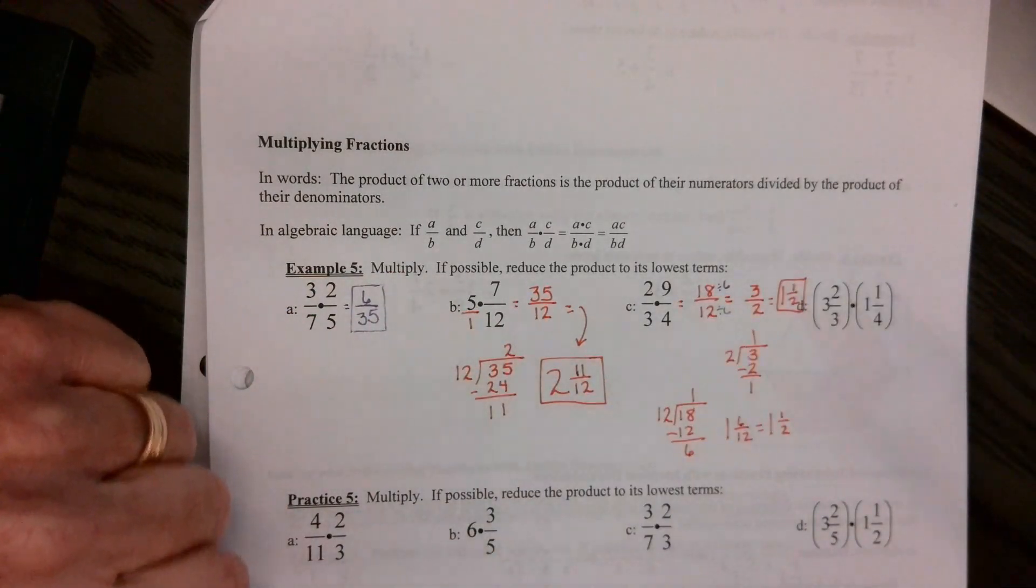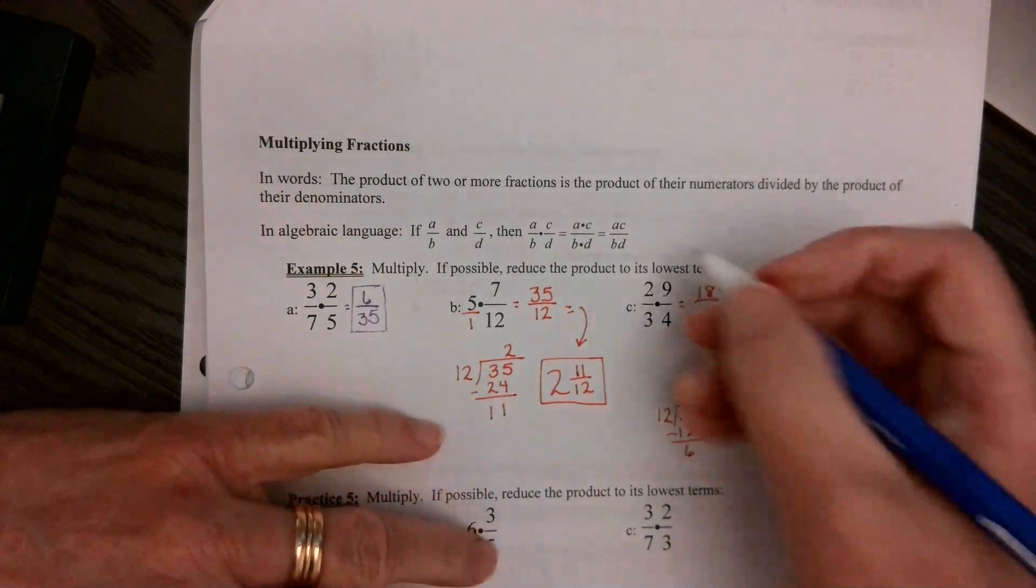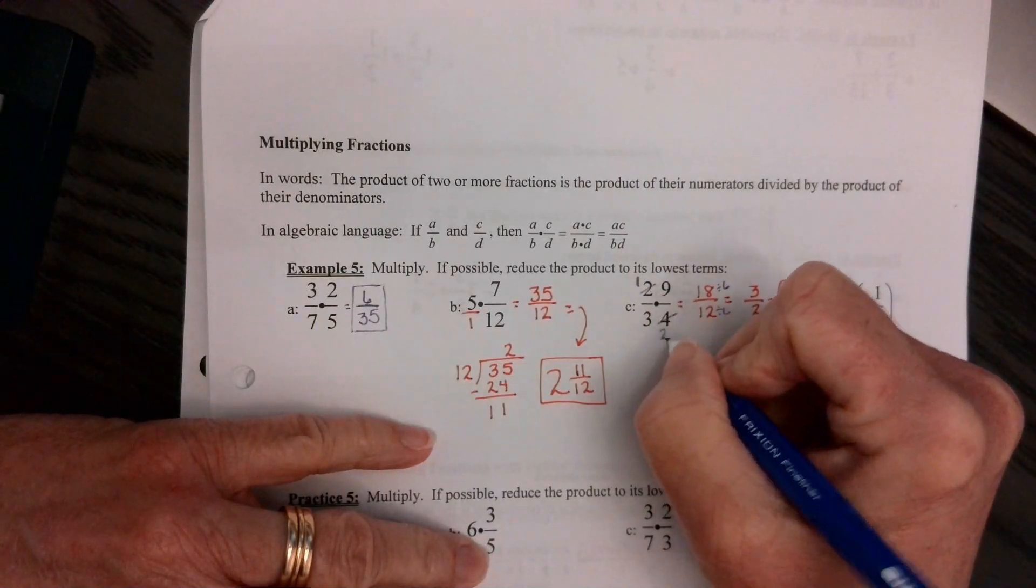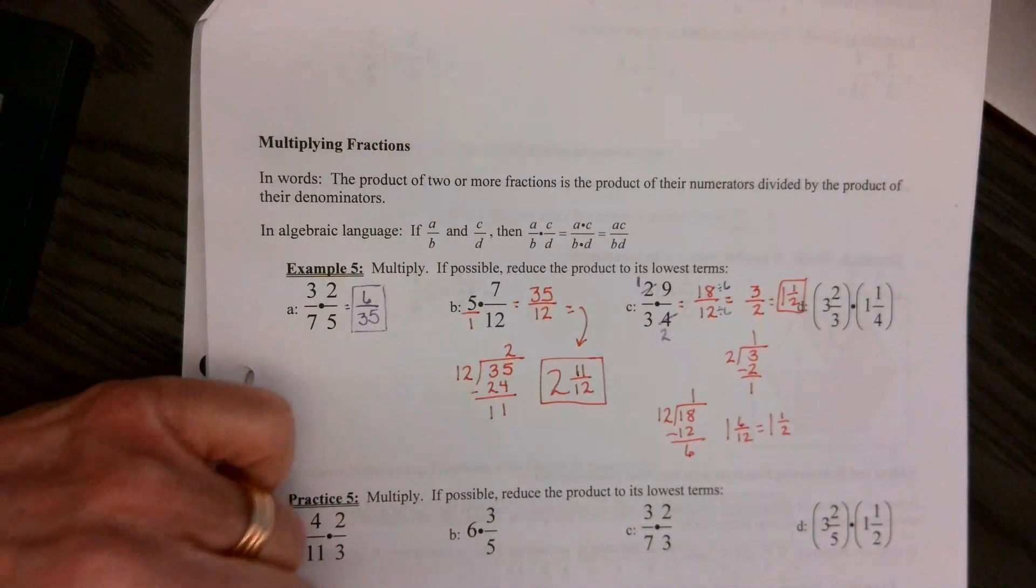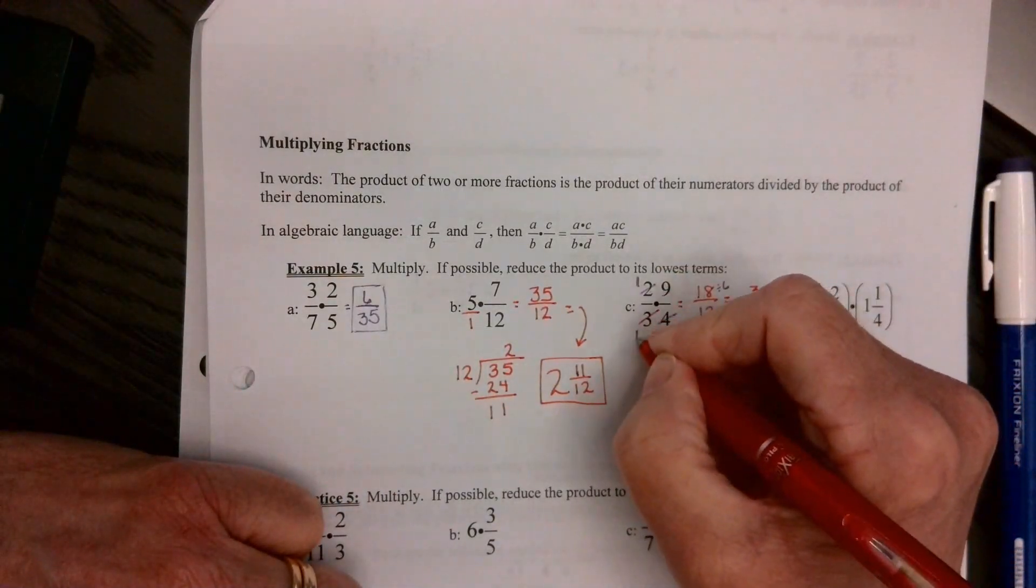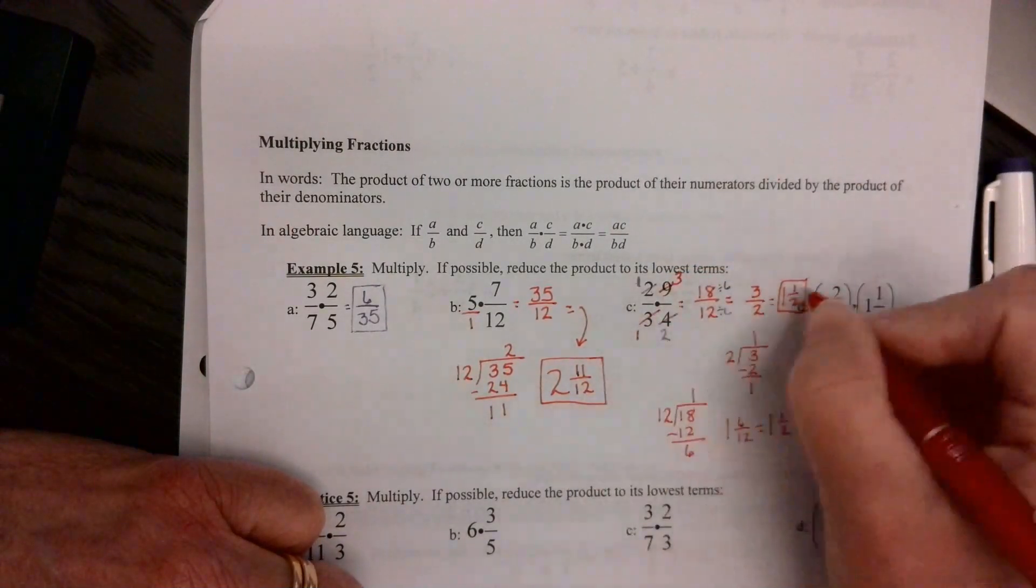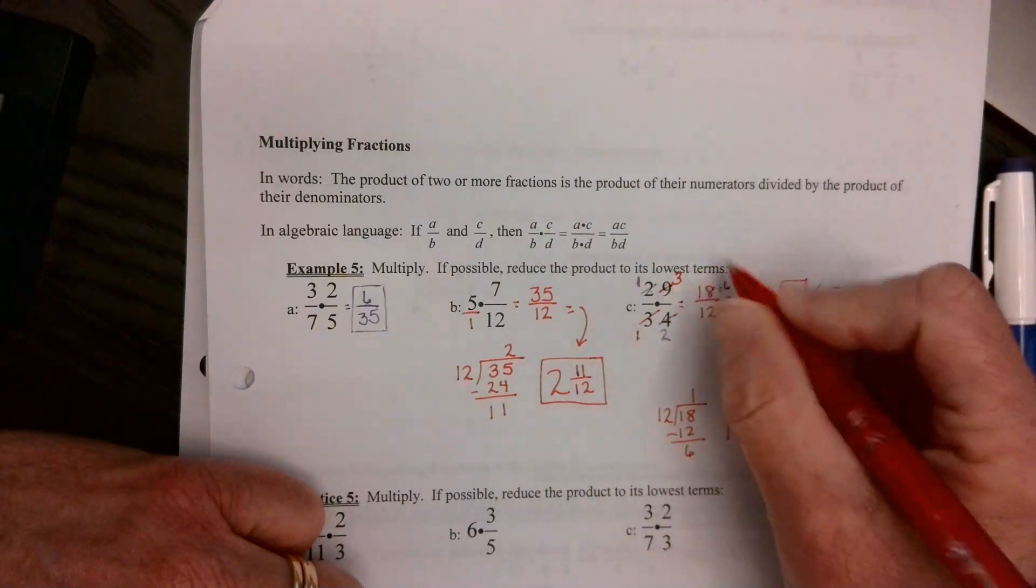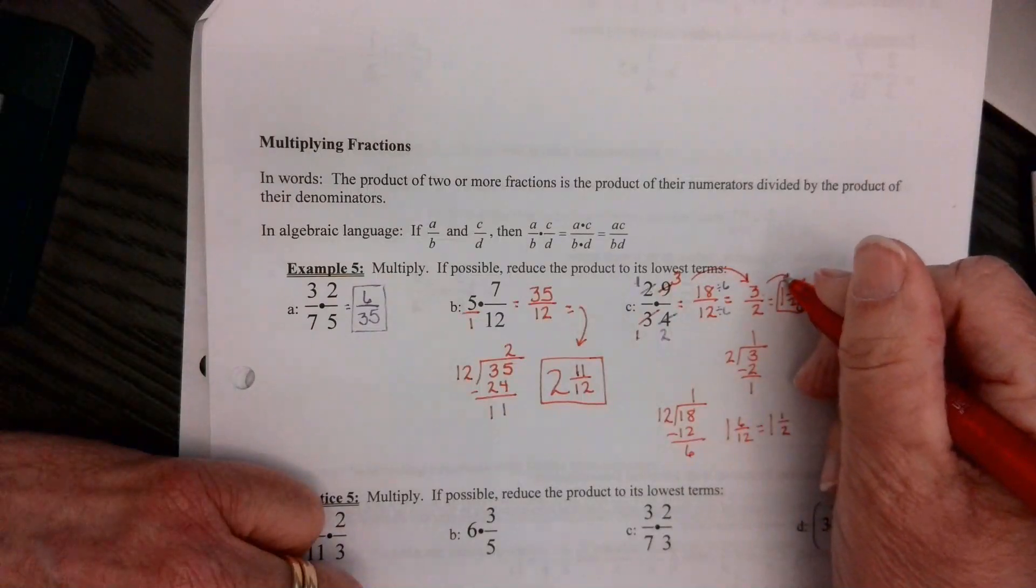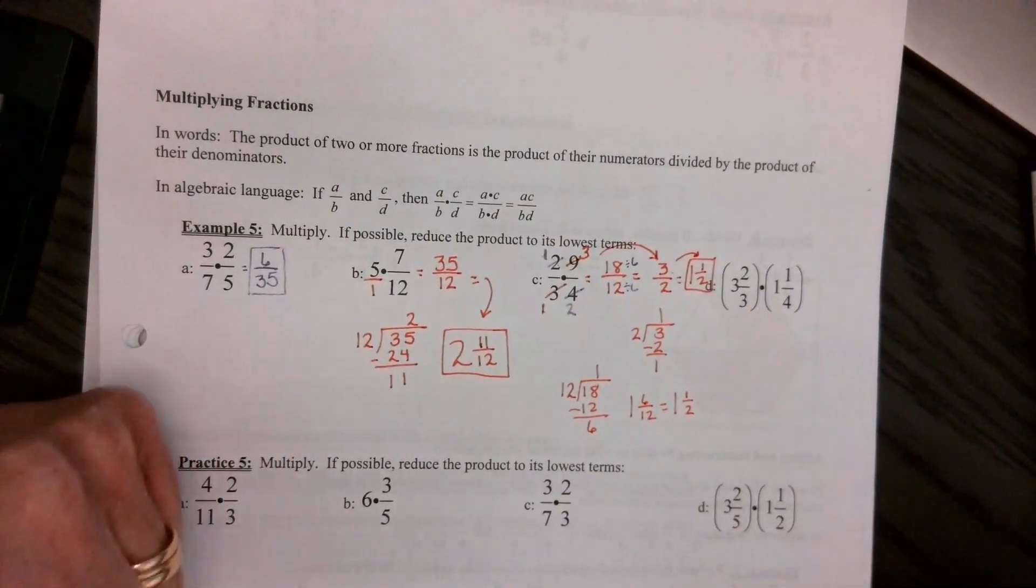That's not even how I do it. You guys multiply, then reduce. I reduce, then multiply. I look at this problem and go 2 goes into itself one time, into 4 two times. Okay. As long as 1's in the top, 1's in the bottom, you can do this. 3 goes into itself one time. Into 9, 3 times. 1 times 3 is 3. Over here, 1 times 2 is 2. So I can go straight to that, and then go there. It doesn't matter. However it is that you learned, stick with it.